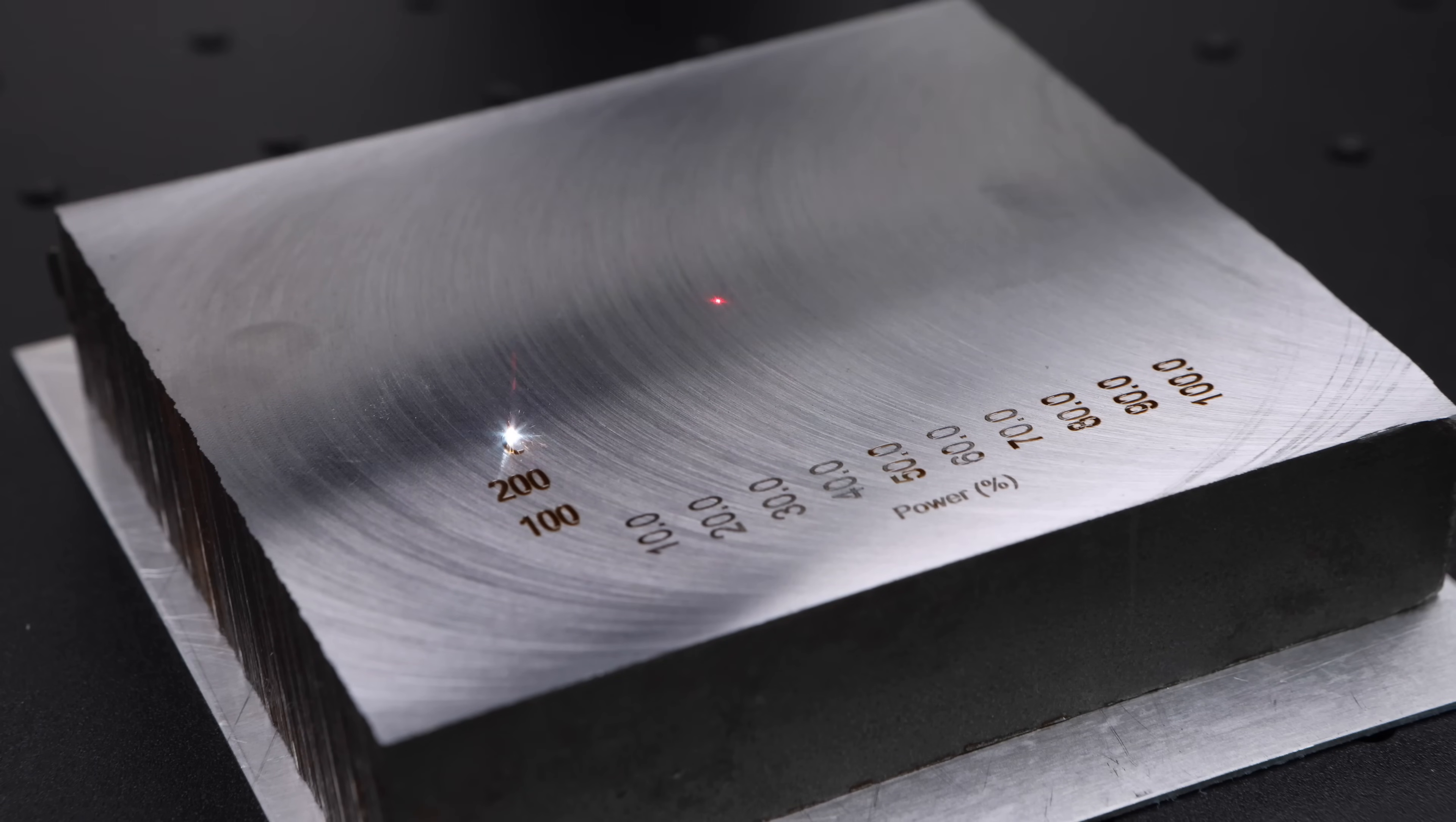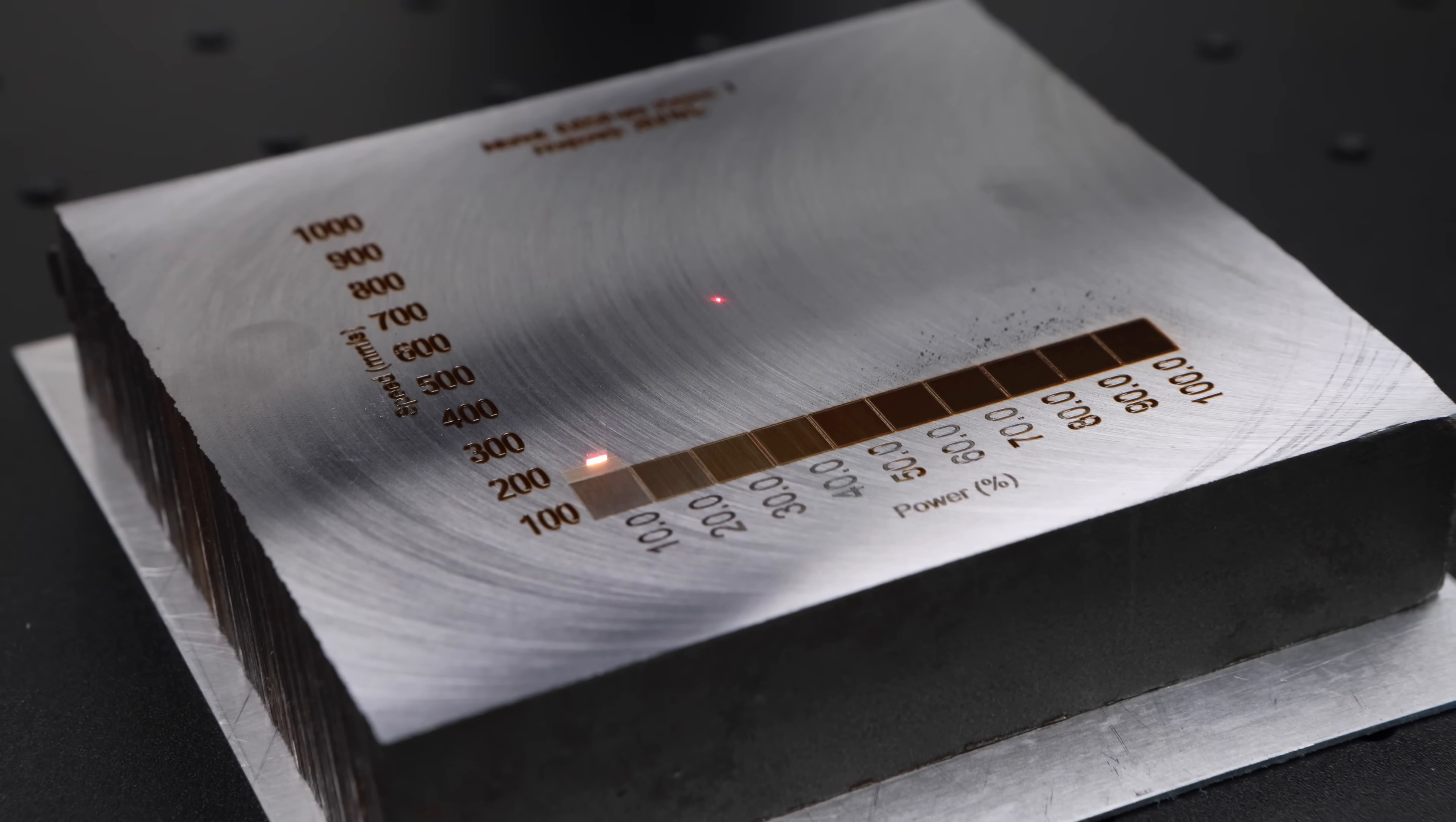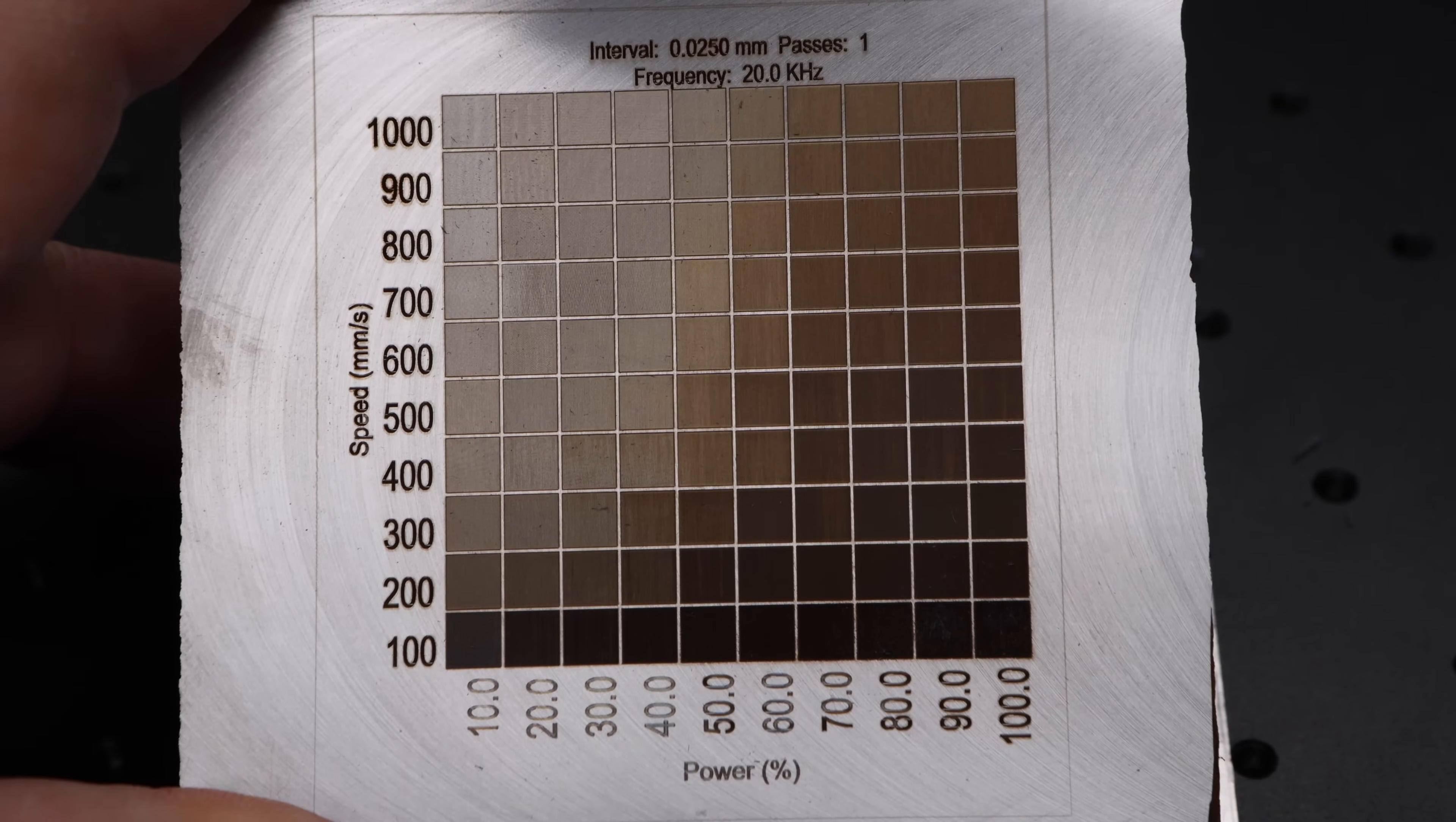Here I've chosen speed versus power so the first square in our grid is going to be 100 millimeters a second at 10 percent power. It will then move on to 20 percent power 100 millimeters a second, 30, 40 and 50 and so on before running through those same power settings at the next speed which is 200 millimeters a second and on it goes up from there.